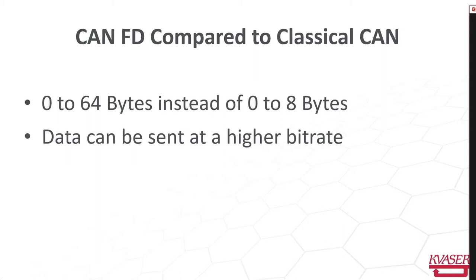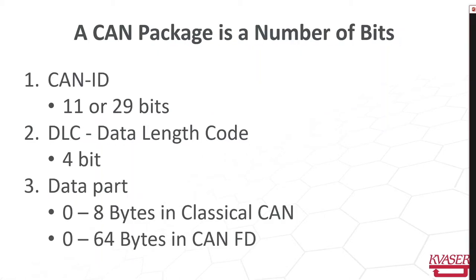If you compare classical CAN to CAN FD, you find that in classical CAN you can only send up to eight bytes, but in CAN FD you can send up to 64 bytes, and those bytes can in CAN FD be sent at a higher bit rate. The CAN package has three segments: the CAN ID which can be 11 or 29 bits, the data length code that tells you how many bytes will be packed into the frame — up to eight bytes in classical CAN and zero up to 64 bytes in CAN FD.